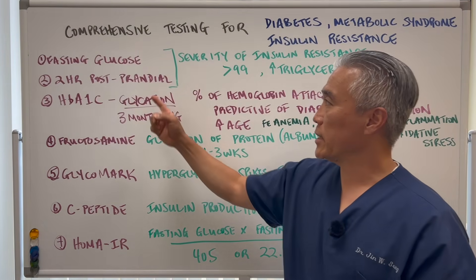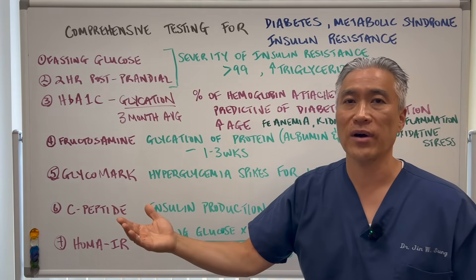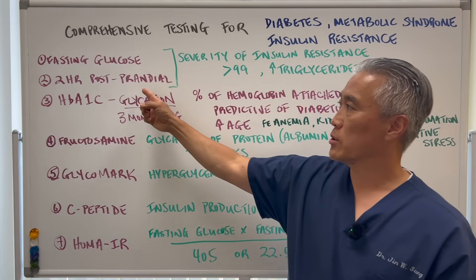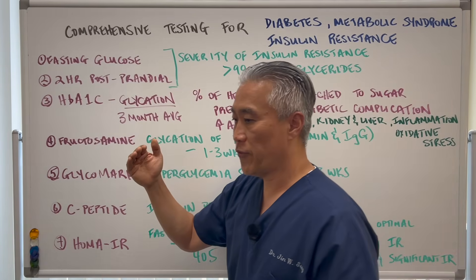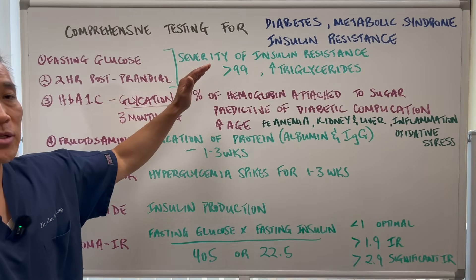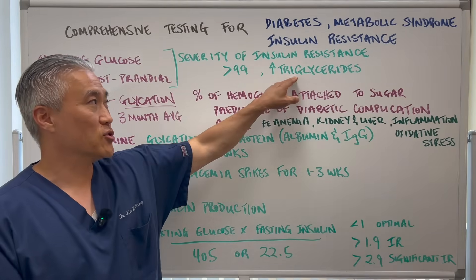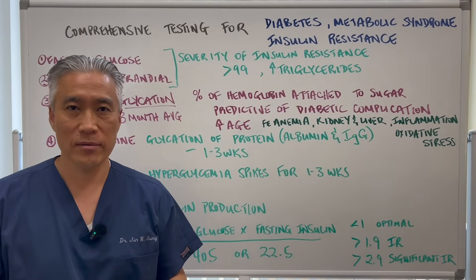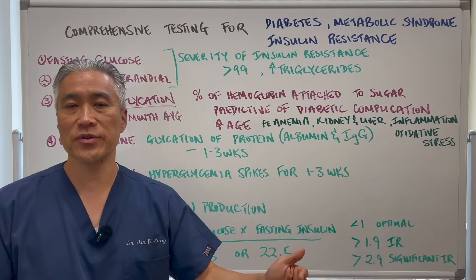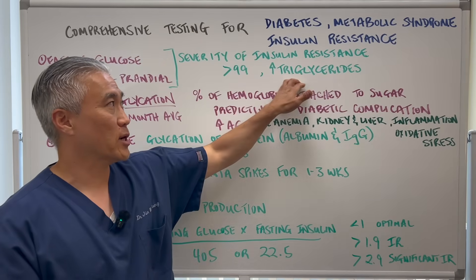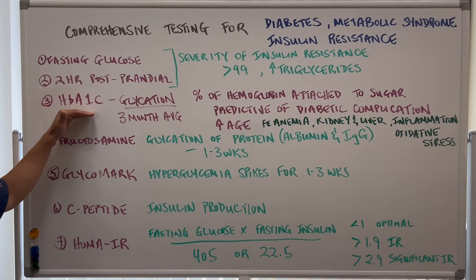You can do fasting glucose and post-prandial glucose at home. Fasting glucose should be done at 10 to 12 hours of fasting. If you're above 99 at that mark — say you're at 110 — and your fasting triglycerides are around 220 to 250, that means you are leaning towards insulin resistance. In the fasted state, triglycerides should be below 100.